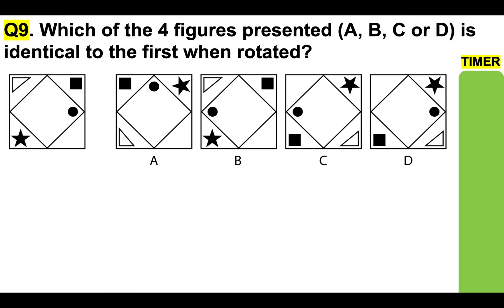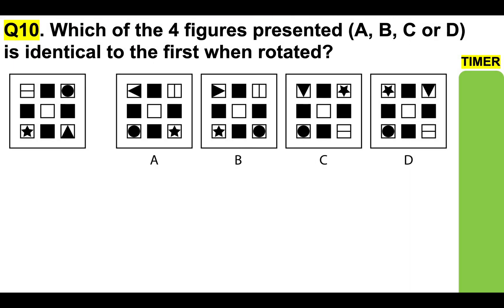Question number 9: which of the four figures presented — A, B, C, or D — is identical to the first when rotated? And finally, question number 10: which of the four figures — A, B, C, or D — is identical to the first when rotated? Put your answer in the comments section below.